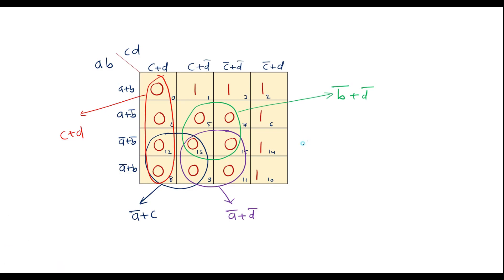So therefore I can write f of a, b, c, d is equal to, we have a bar plus c, we have a bar plus d bar, then we have c plus d. So this is in POS form, that is product of sums form. So this is the simplified expression.